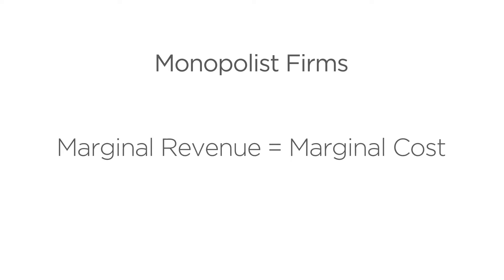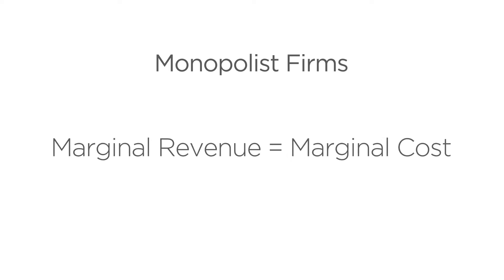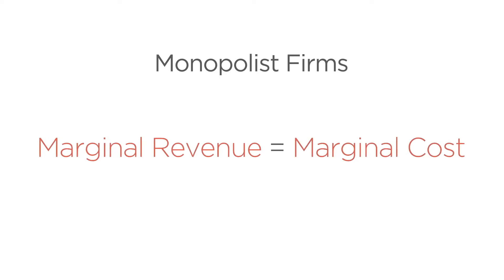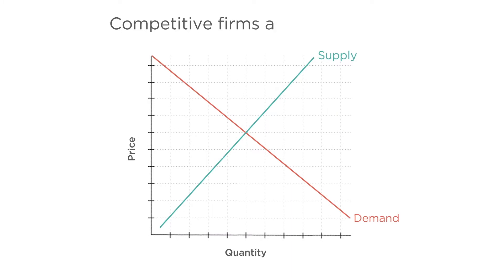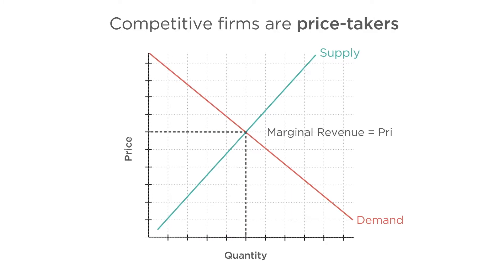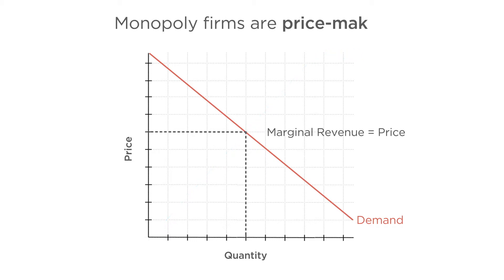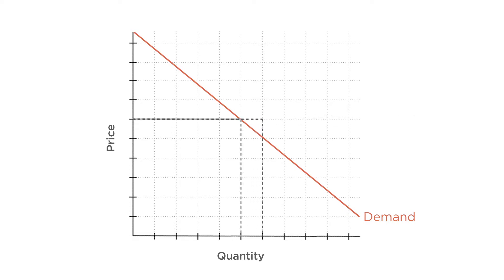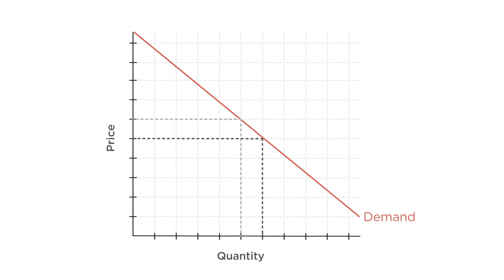Recall that monopolists maximize profits, just as competitive firms do, by producing until marginal revenue equals marginal cost. Competitive firms are price takers, so their marginal revenue is simply the market price. But monopoly firms are price makers who get to choose the price. For a monopoly firm facing a downward-sloping demand curve, the marginal revenue will always be less than the price. To sell an additional unit, the firm would have to lower the price to attract that additional buyer.